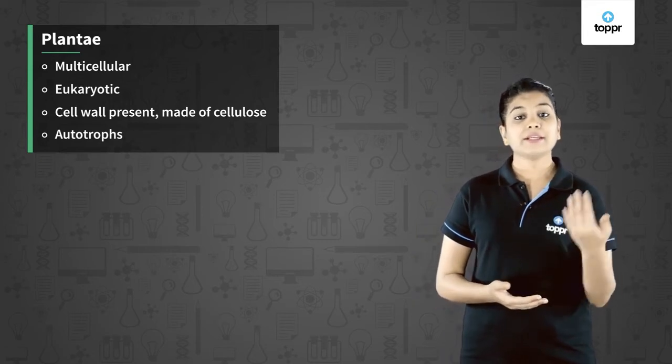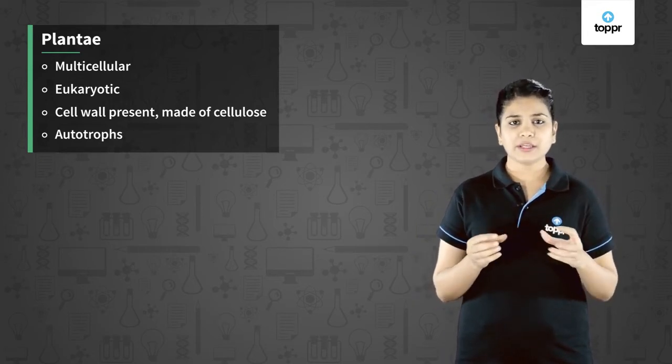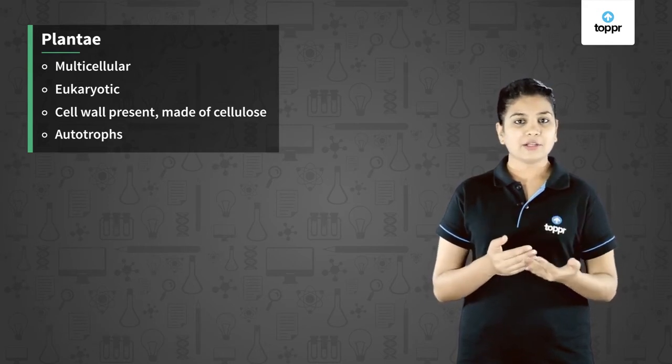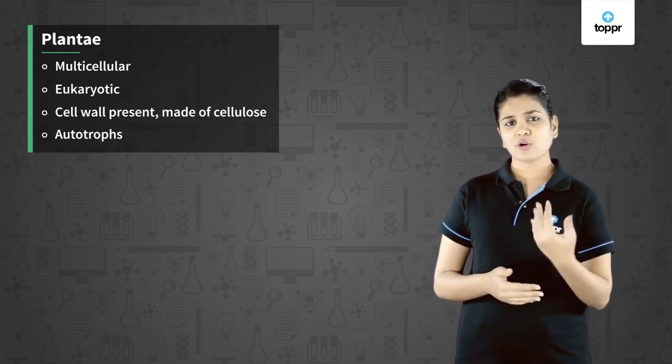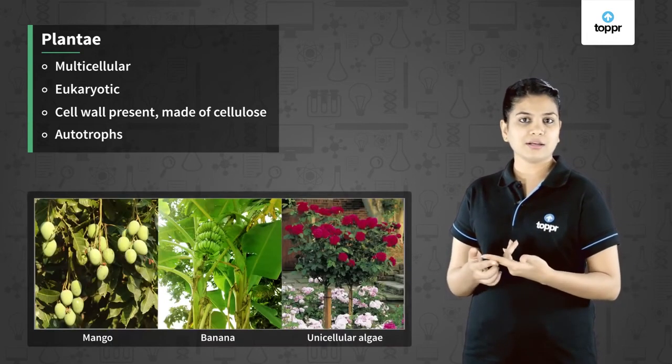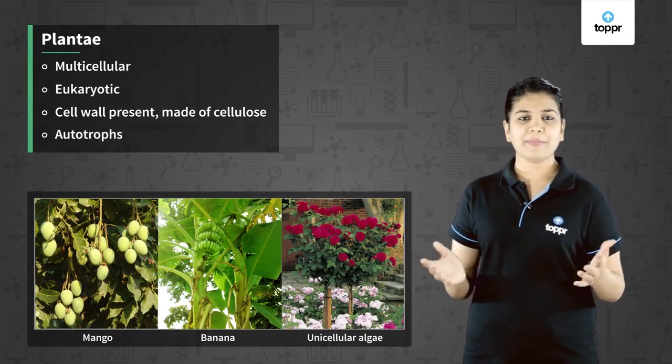The mode of nutrition - we very well know that plants are autotrophs. The plant kingdom can be further divided into various divisions where we will see different kinds of plants. Common examples of plants are mango, banana, rose and many others.